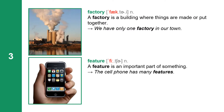Next word: factory. Factory has three syllables: F-A-C-T-O-R-Y. The first syllable is 'fact.' Factory is a noun. A factory is a building where things are made or put together. We have only one factory in our town.